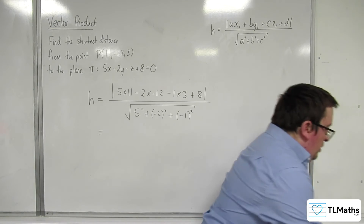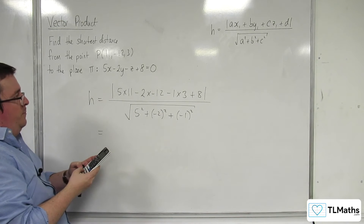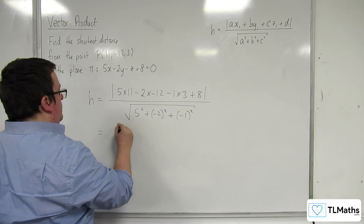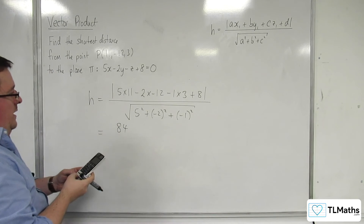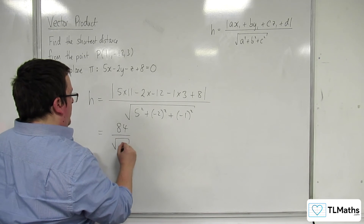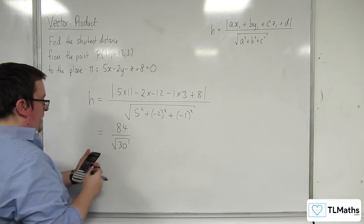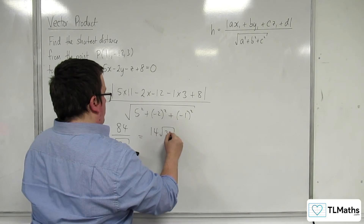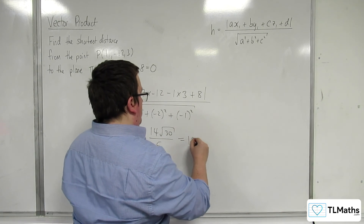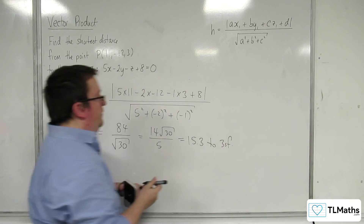In the numerator, we've got 5 times 11 plus 24, take away 3, plus 8, which gives us 84. In the denominator, 25 plus 4 plus 1 gives root 30. So 84 divided by root 30 is 14 root 30 over 5, which is 15.3 to 3 significant figures.